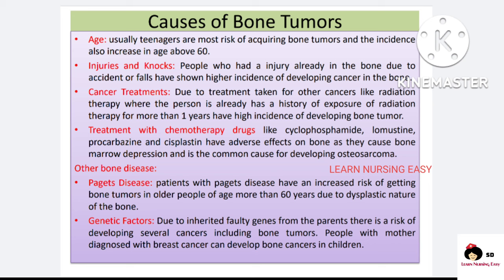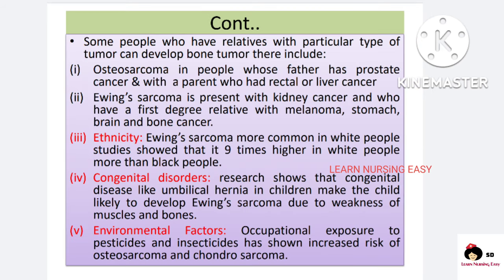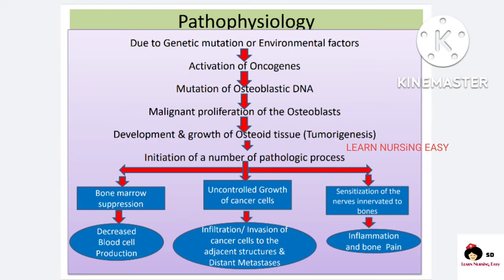Paget's disease — where the recycling or remodeling of the bone is altered — puts patients at high risk of cancer. Genetic factors — if there is any family history of cancer, faulty gene mutations can pass the cancer risk to children. Ethnicity — certain cancers are at higher risk in white people than black people. Congenital disorders — children born with congenital disorders where muscle and bone are weakened can develop cancer. Environmental factors like occupational exposure to pesticides, insecticides, and chemicals can also lead to cancer.